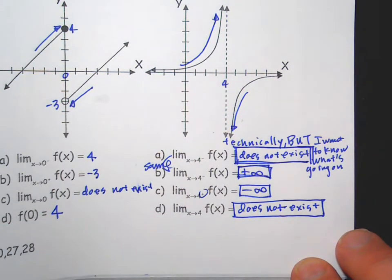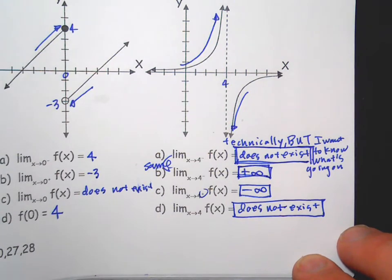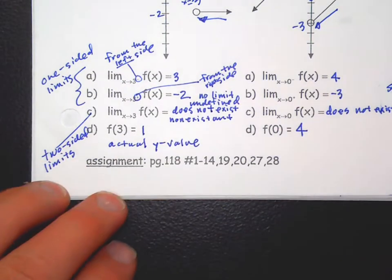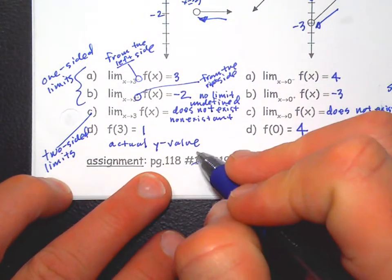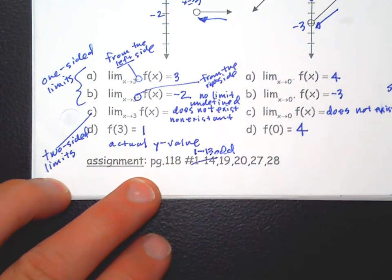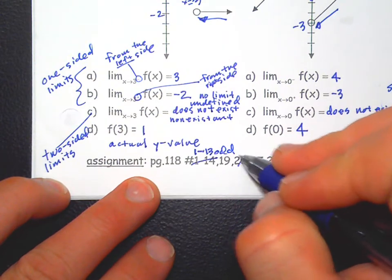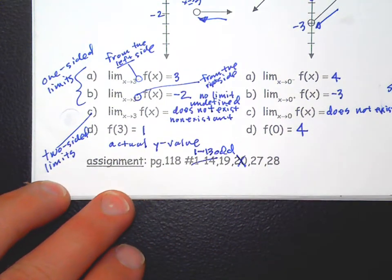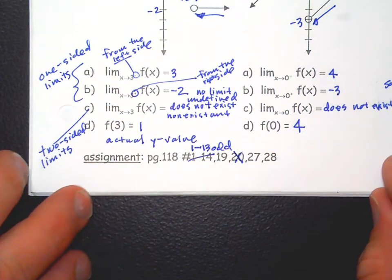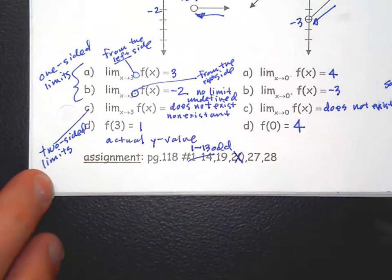So on the homework, which I'm going to make a lot shorter—let's say instead of 1 to 14, I'll do 1 to 13 odd. Sound good? And we'll get rid of problem 20. So I think I got rid of almost half the problems right there.